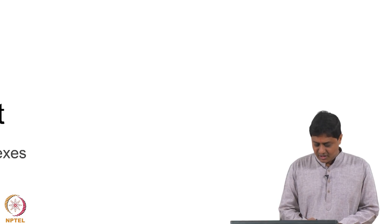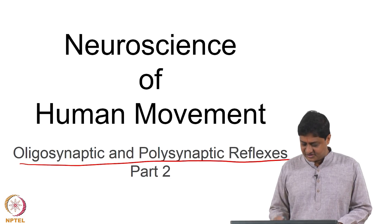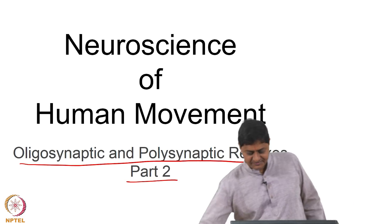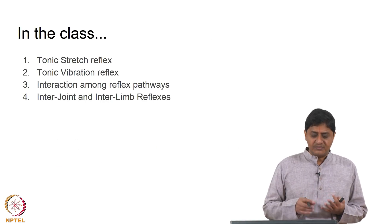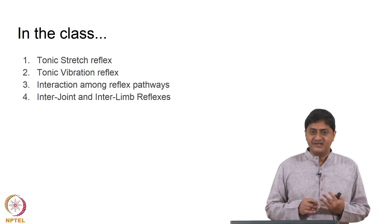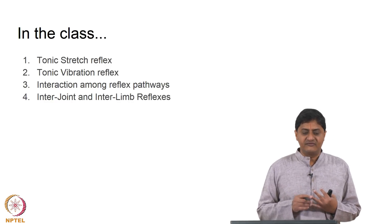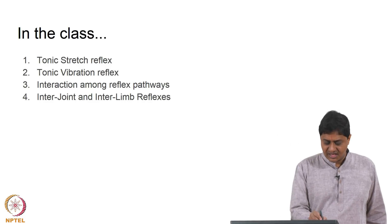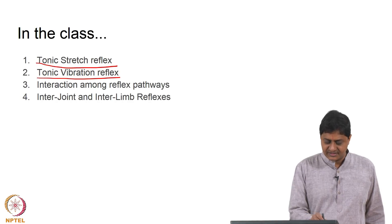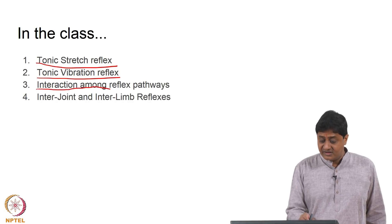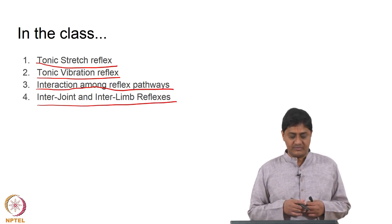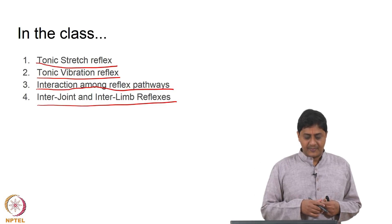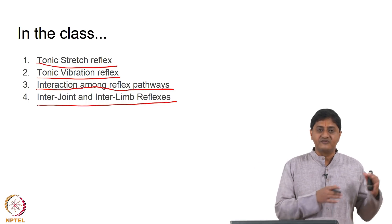Welcome to this class on Oligosynaptic and Polysynaptic Reflexes. This is part 2 of 2 parts. In the previous class we discussed Oligosynaptic Reflexes 1A and 1B and Polysynaptic Reflexes of Tonic Stretch Reflex and Flexor Reflex. In this class we will start with Tonic Stretch Reflex and discuss other cases such as tonic vibration reflex and interactions between these pathways and how interjoint and interlimb reflexes happen, which is more complicated than what we have studied so far.